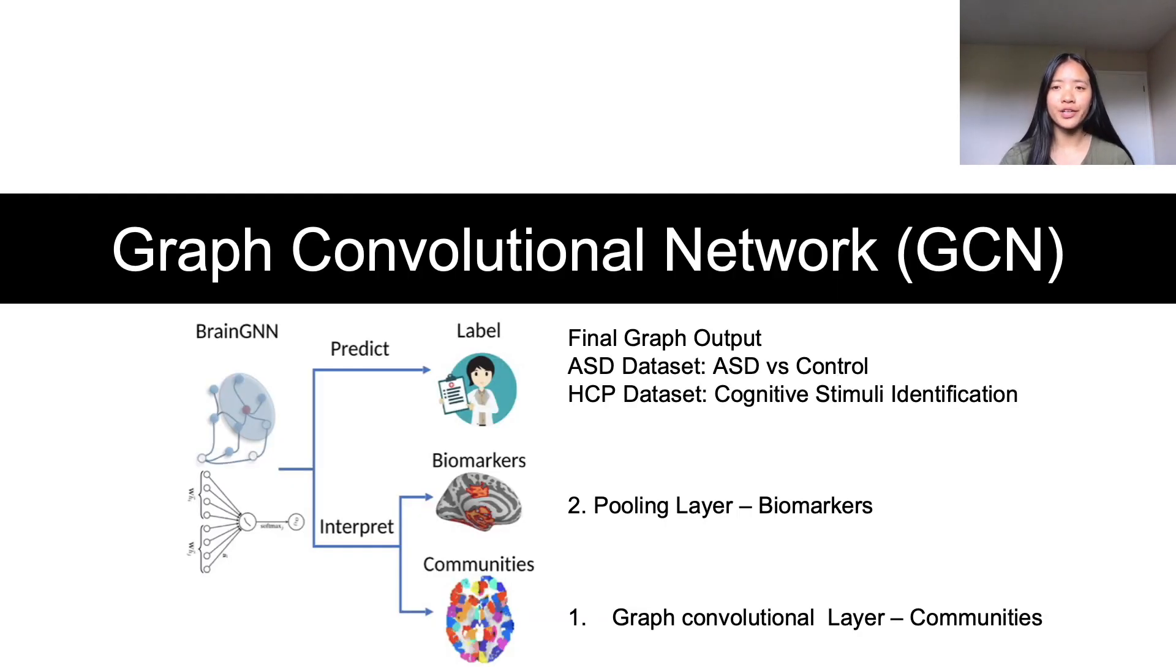Now that we have a better understanding of what goes into the neural network, we can discuss what occurs in the layers of the BrainGNN. A graph neural network traditionally has three types of outputs: graph level, edge level, and node level. However, this graph convolutional network is unique because it has both a graph level and node level outputs.